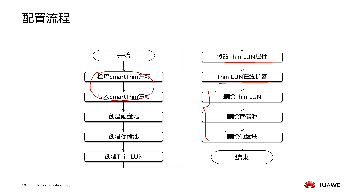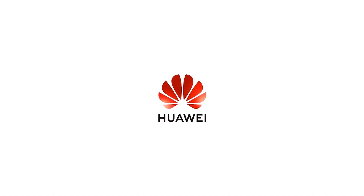Let's review the content learned in this lesson. We primarily studied the working principle of SmartThin, its application scenarios, and configuration process. The focus is on the read and write operations of SmartThin. Through storage resource virtualization technology, ThinLun mappings are created for users. Only when the user performs real IO read and write operations on the ThinLun is actual physical storage space applied from the storage resource pool through on-demand allocation. This increases the utilization rate of storage space and enables refined capacity management. While saving space, it also supports online expansion. That concludes the content of this lesson. Thank you for studying. See you next class.